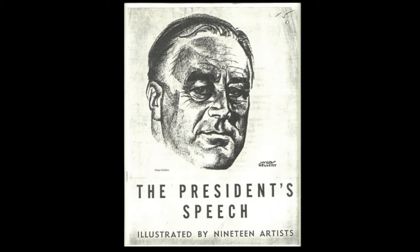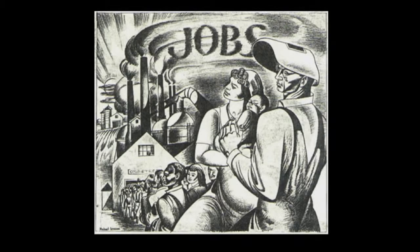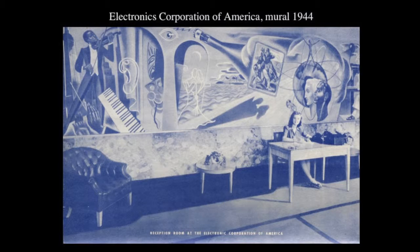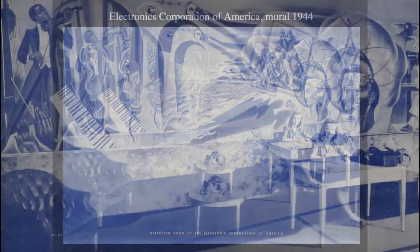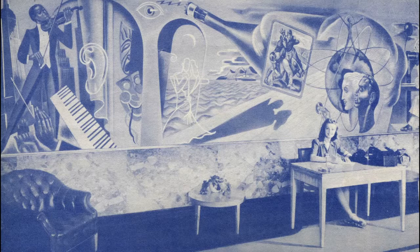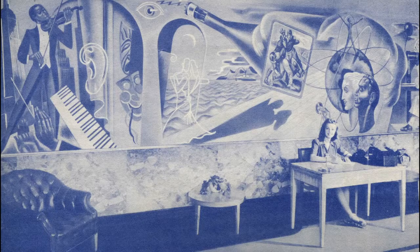He was among 19 artists chosen to provide illustrations for the President's speech in a lovely little publication. Hugo Gellert did the cover portrait of Roosevelt. This is his illustration for that book presentation of the Four Freedoms speech. For the Electronics Corporation of America — from an old company brochure — this mural looks a little jazzier, with a musician playing violin, a keyboard floating in space, an ear as if listening, the masks of theater, and science imagery on the right. It's all about modern America, both the arts and industry.